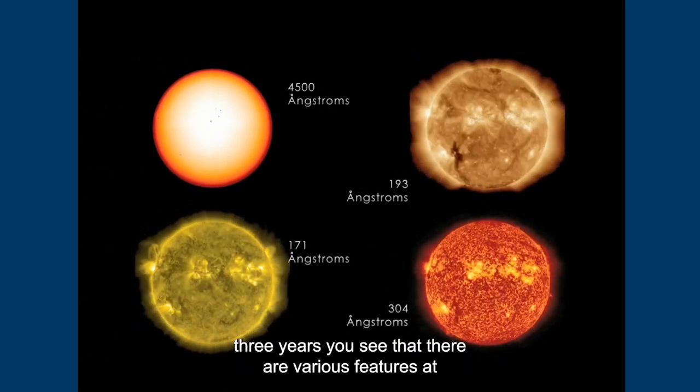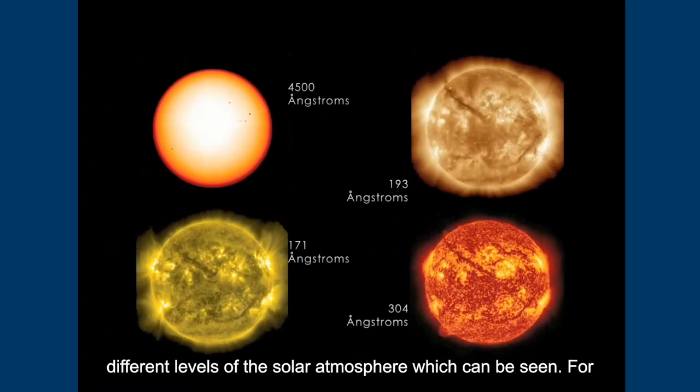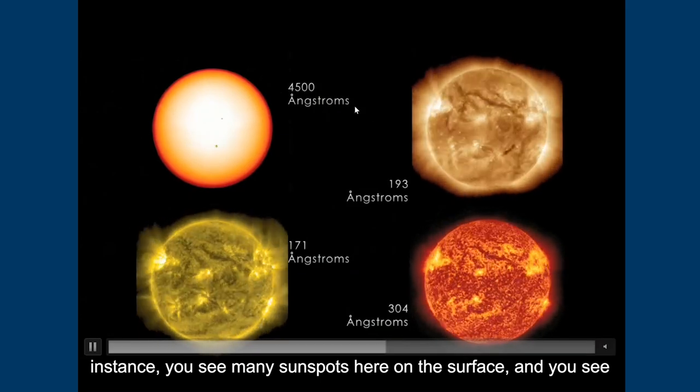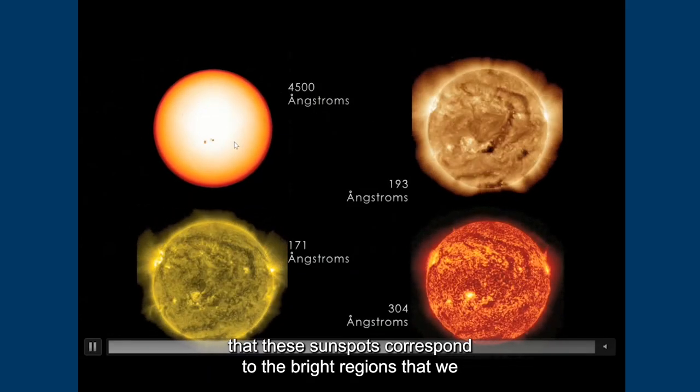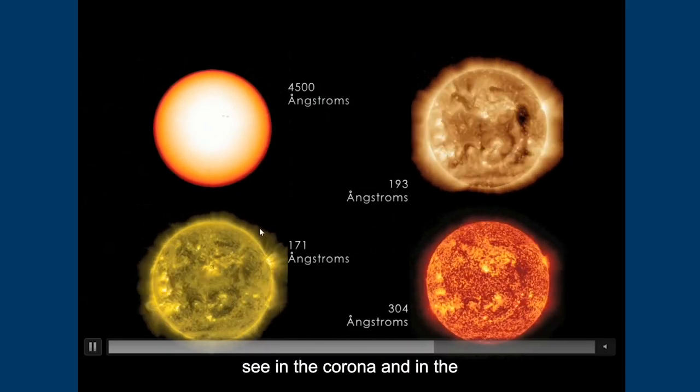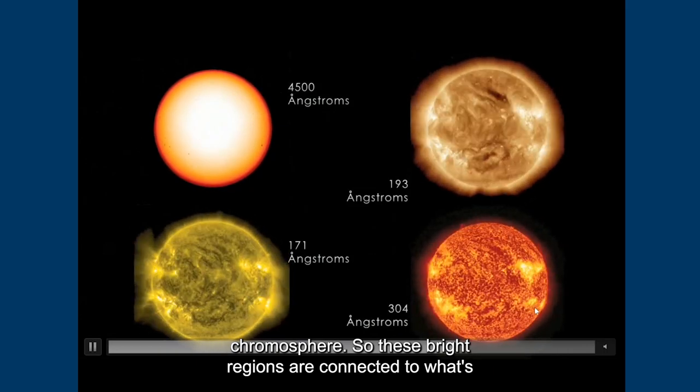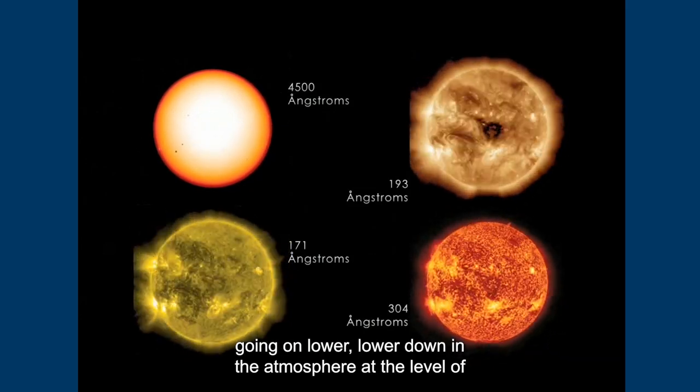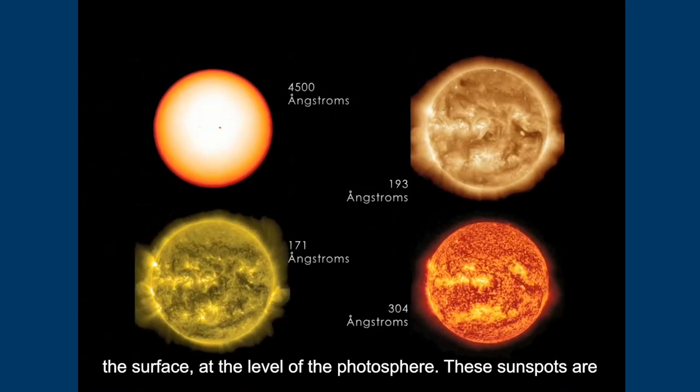You see that there are various features at different levels of the solar atmosphere which can be seen. For instance, you see many sunspots here on the surface, and you see that these sunspots correspond to the bright regions that we see in the corona and in the chromosphere. So these bright regions are connected to what's going on lower down in the atmosphere at the level of the surface, at the level of the photosphere.